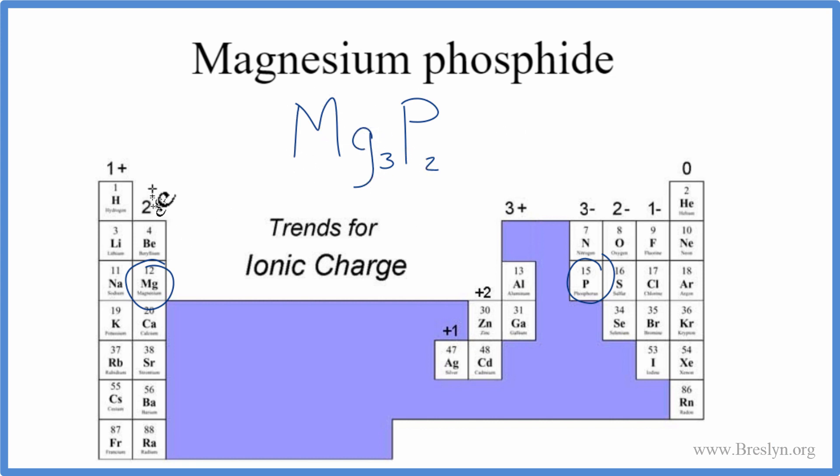So remember we said magnesium group 2, that's 2 plus. Phosphide, that's the 3 minus. So the magnesium atoms should cancel out the charge on the phosphorus atoms. Let's see if that works. 3 times 2 plus, that's 6 plus. 2 times 3 minus, that's 6 minus. 6 minus, 6 plus, that adds up to 0. The net charge is 0. This is the correct formula for magnesium phosphide.